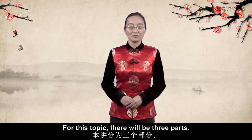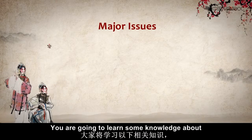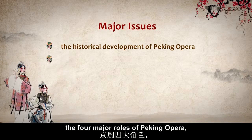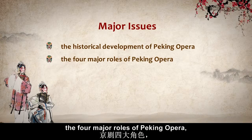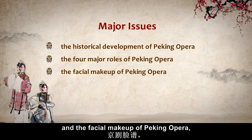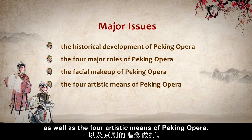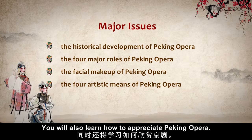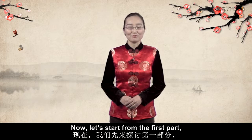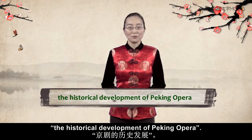For this topic, there will be three parts. You are going to learn some knowledge about the historical development of Peking Opera, the four major roles of Peking Opera, and the facial makeup of Peking Opera, as well as the four artistic means of Peking Opera. You will also learn how to appreciate Peking Opera. Now, let's start from the first part, the historical development of Peking Opera.